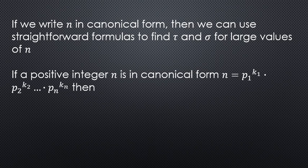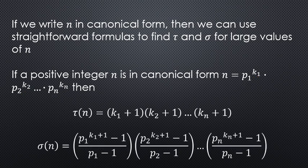So if you have a positive integer n that is in its canonical form, you have primes p₁, p₂, p₃, p₄, all the way up to and including pₙ. And these primes have their respective powers of k₁, k₂, all the way up to and including kₙ. Then these are the formulas for τ and σ.